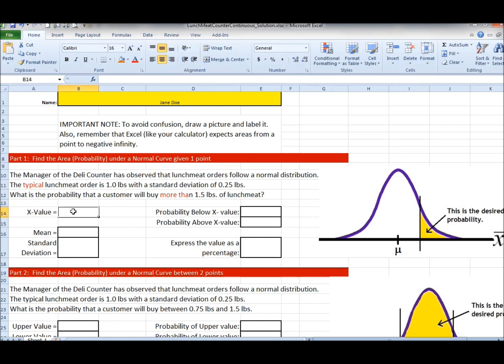Now to me the hardest part of a word problem is drawing the picture, labeling it, and by labeling it I mean putting actual values with variables. So when it says what is the x value, well x values are things that I put along this. They tend to have units of measure so pounds is our unit of measure. The x value is what is the probability of customer will buy more than 1.5, so 1.5 is our x value.